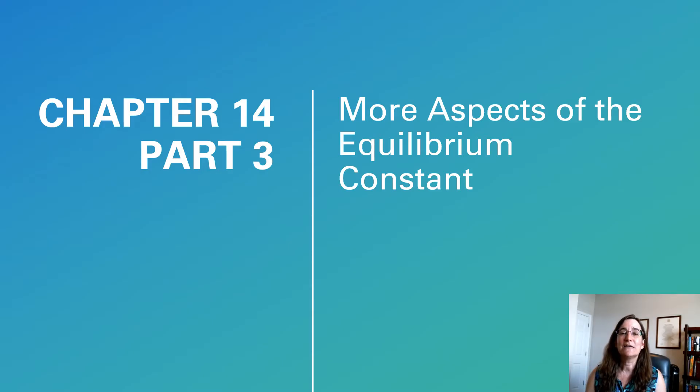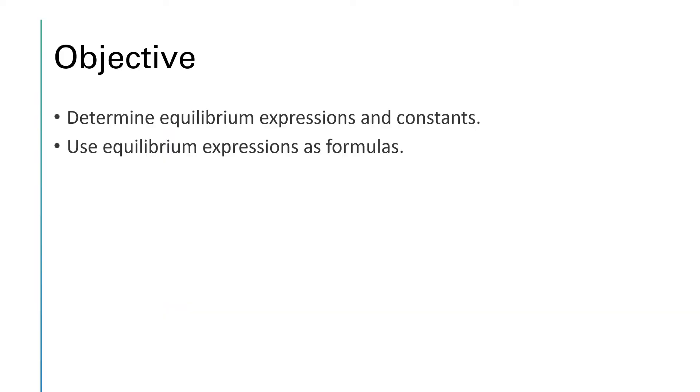We're going to see what happens to the value of the constant when you change the temperature. We're also going to see how we can use that equilibrium constant expression as an equation, and if we know all but one of the parameters in the equation, we can solve for the missing one. We'll wrap some of these things together, including the units that apply to equilibrium constants. So our big objectives are to determine equilibrium expressions and constants, as well as to use these equilibrium expressions as formulas.